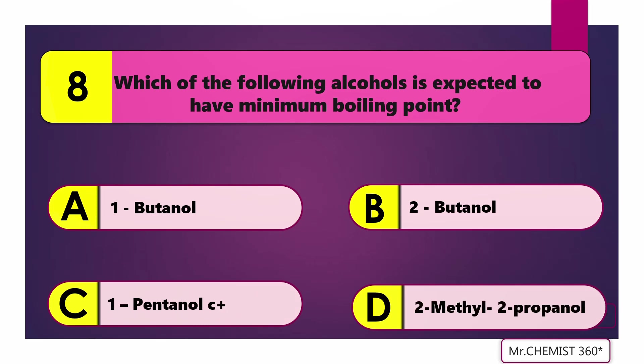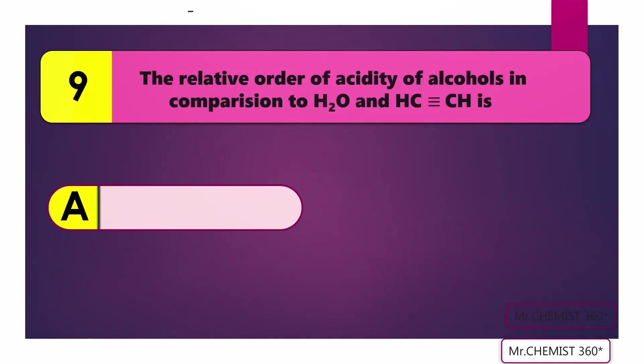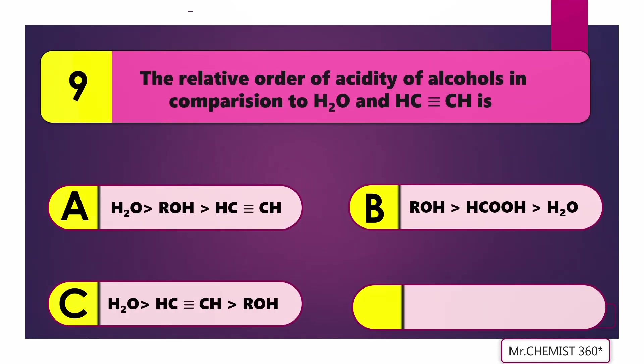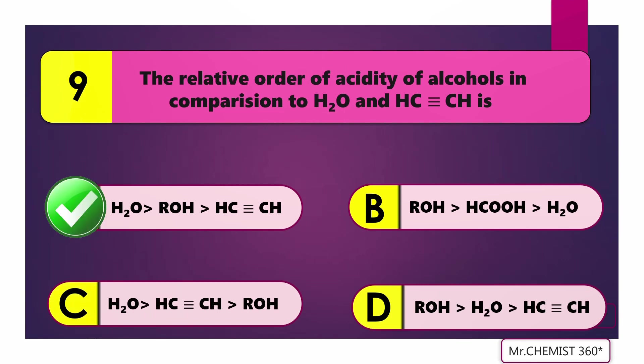Question 8: Which of the following alcohol is expected to have a minimum boiling point? Answer: 2-methyl-2-propanol. Question 9: The relative order of acidity of alcohols in comparison to H₂O and CH≡CH (alkyne) is? Answer: Water greater than alcohol greater than alkyne.